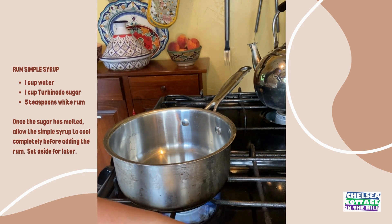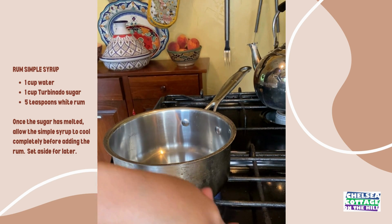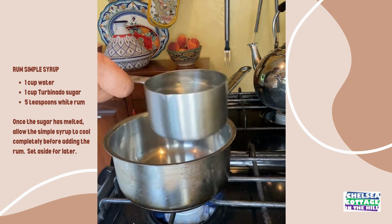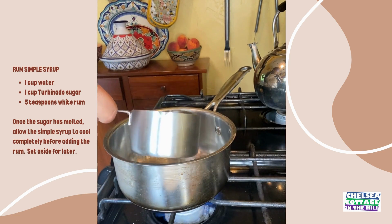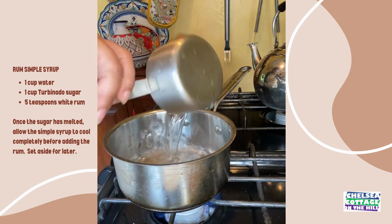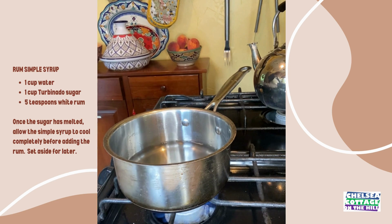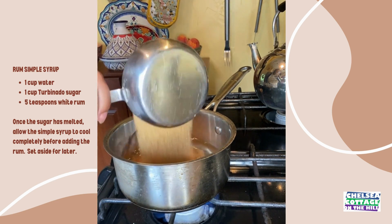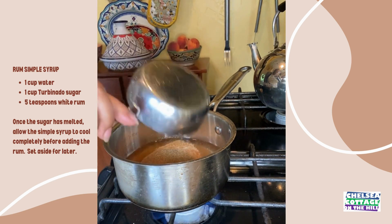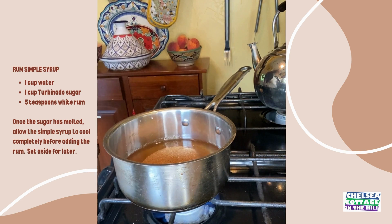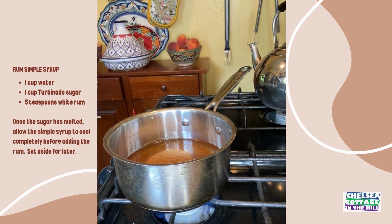After the simple syrup has cooled, add the rum. I'm using white rum in this recipe, but you can use your favorite type. Next, we'll make the actual cake. I'm using a stand mixer, but a hand mixer works just as well. I'm using both molasses and brown sugar in this recipe.